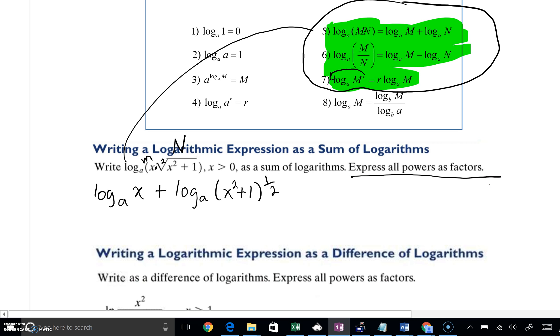The second part of our problem, we're supposed to express all powers as factors. That's really property number 7 that we've highlighted up above. Any exponent inside of the log can be brought down. So this becomes log base A of X plus, I can bring that one-half down in front. That's one-half log base A of X squared plus 1. So when we have this multiplication of two terms inside of a log, we can use property number 5 and write two logarithms that are added together.